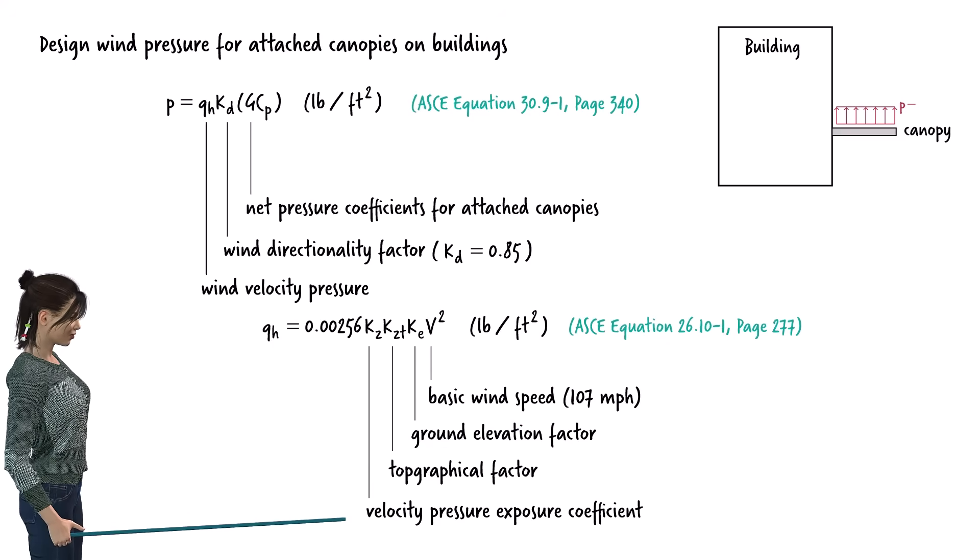The velocity pressure exposure coefficient is a factor used to account for variations in wind speed due to differences in terrain and height above ground level.